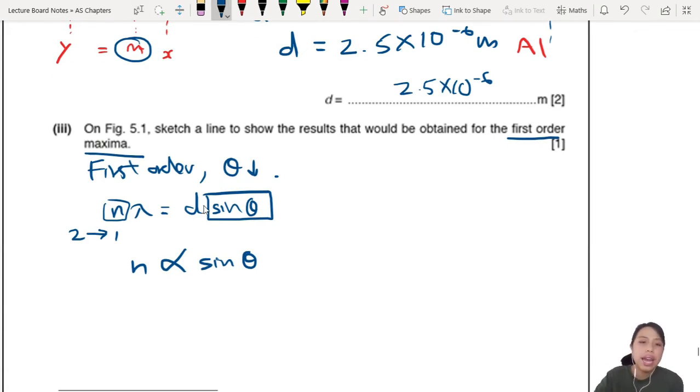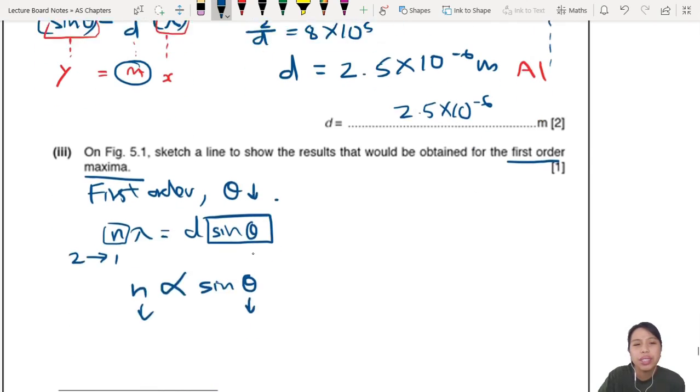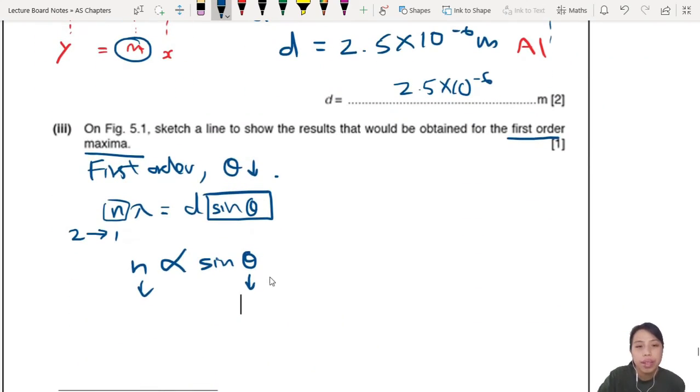But if you want to see how the line changes, n decrease, sin θ decrease. You need to think of your gradient. What was the gradient again? n/d. Oh, let's rearrange it a bit. So n/d, yes, you put the lambda here, it goes to the sin θ.